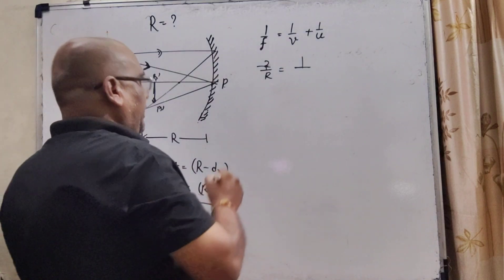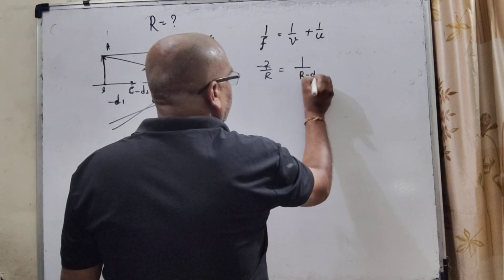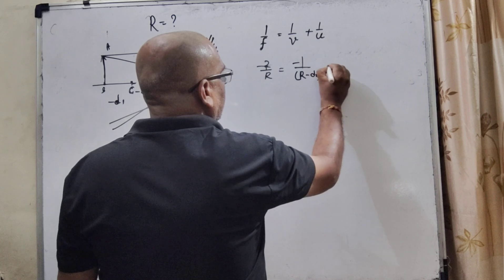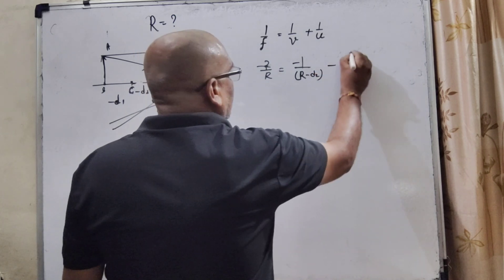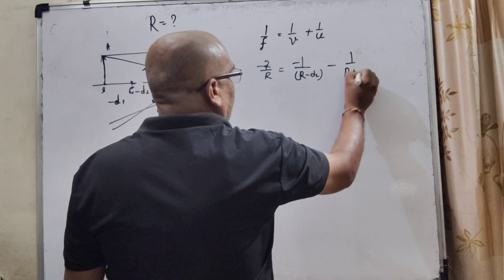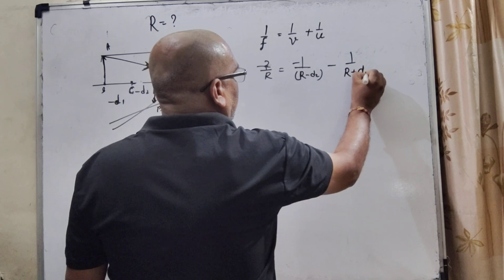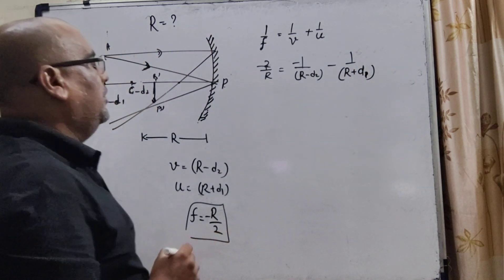So, therefore, take a negative. So, here, R minus d2, that is negative, minus 1 upon R plus d1.